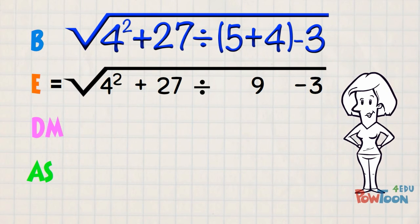Exponents are next. We have 4 squared, that's 16. Transfer the remaining terms including the radical.